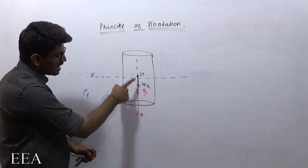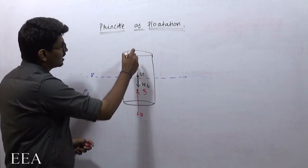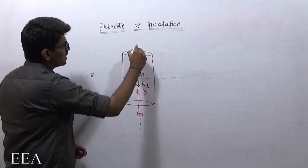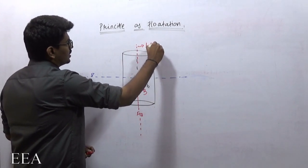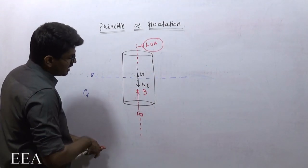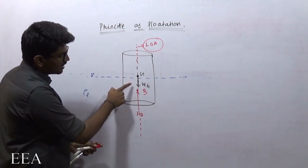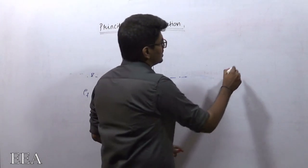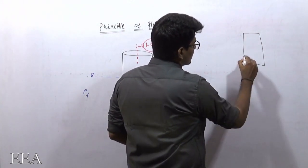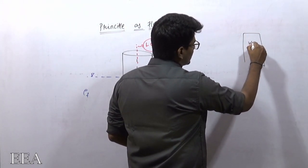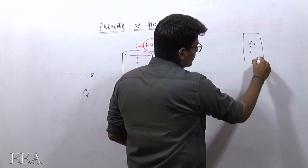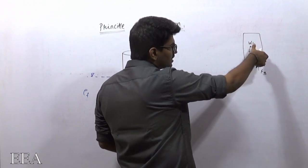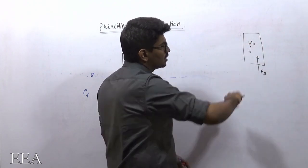Moreover, both the weight and buoyancy force should act in the same line of action — that is very, very important. It should be acting in the same line of action, because if both the buoyancy force and weight of the body are not in the same line of action, there will be a resultant moment, so the body will start to rotate.